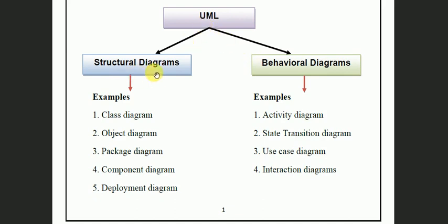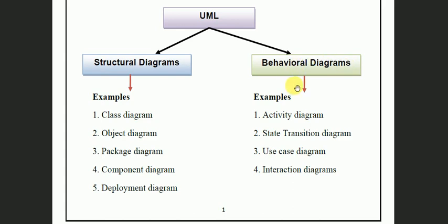UML has structural diagrams and behavioral diagrams. The structural diagram includes class diagram, object diagram, package diagram, component diagram, and deployment diagram. The static structure of the system is represented by the structural diagram, and the dynamic structure is represented by the behavioral or functional diagram.